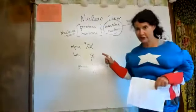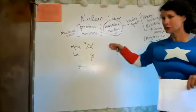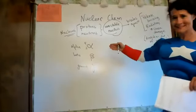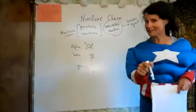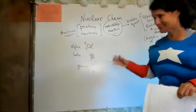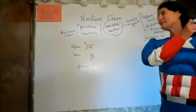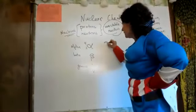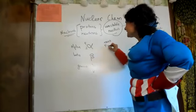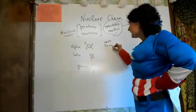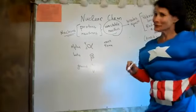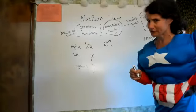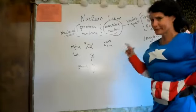Alpha is huge — this is like the Tyrannosaurus rex of ionizing radiation. It has a mass of 4 AMUs (atomic mass units), which is really about 10 to the negative 24 grams. It's really small, but on the atomic scale this is massive.